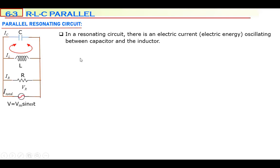In a parallel resonating circuit, R, L, and C are connected in parallel. There is a current continuously moving between C and L — oscillating back and forth. This is called resonating, also called an oscillating circuit.